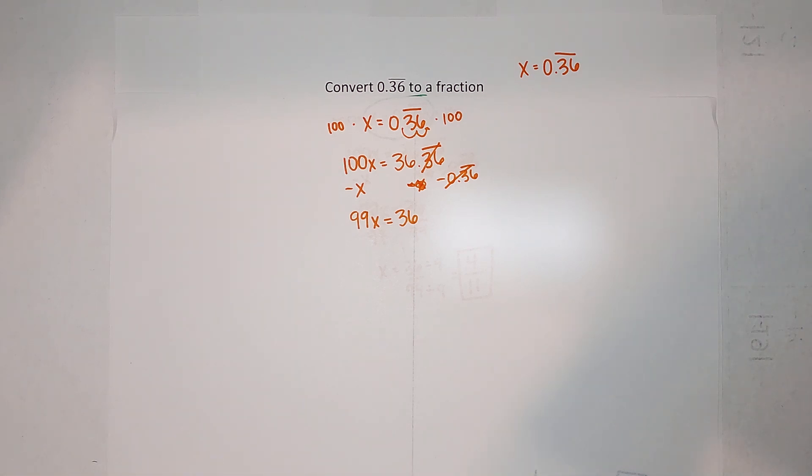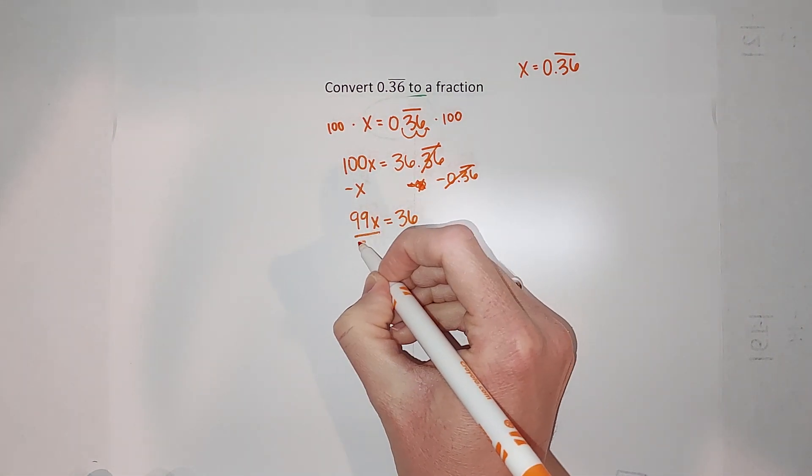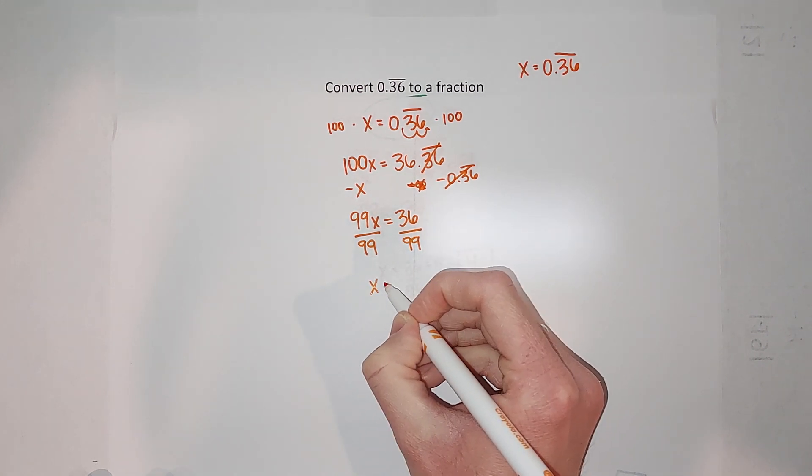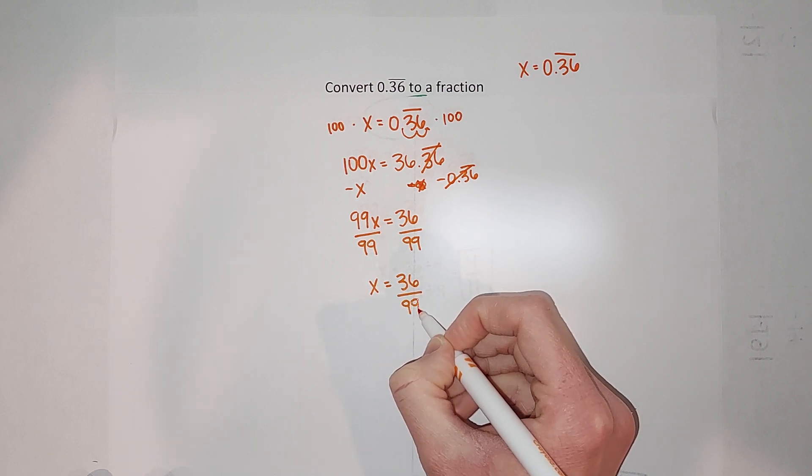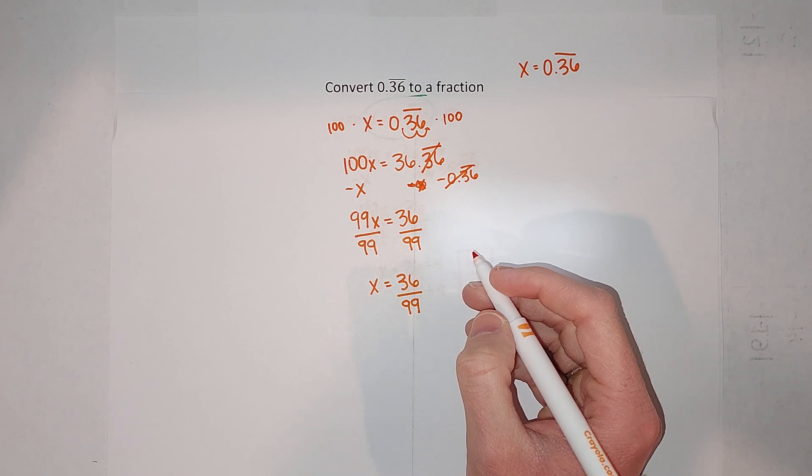So I get x equals 36 over 99. Beautiful! This can be simplified.